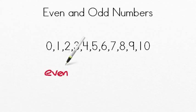So even numbers are numbers that always can be distributed evenly. So the numbers 0, 2, 4, 6, 8, and 10 are all even numbers.